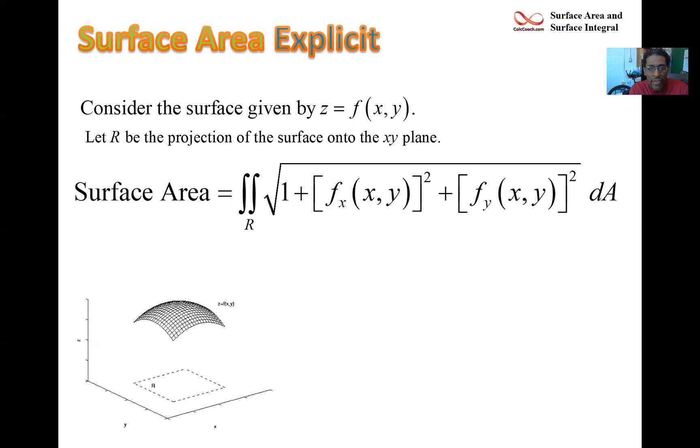And ds when you're explicitly defined is you take the x partial, you square, you take the y partial, square, you add one, you take a square root, and you multiply that by dA. So that's our formula. We've got to make sure that these partials exist and they're continuous on the region and we can be able to do this. And now let's see an example.